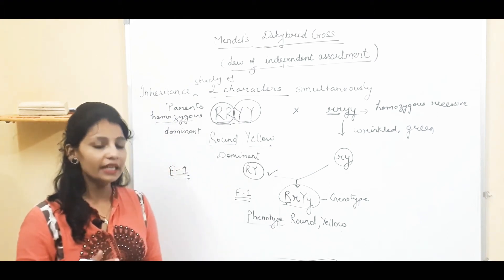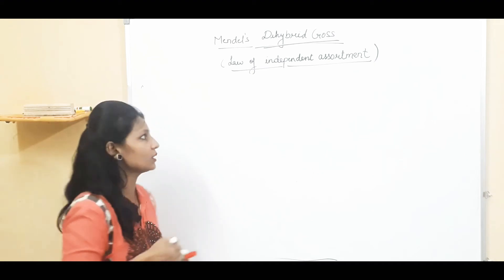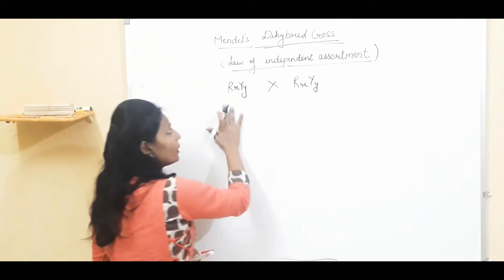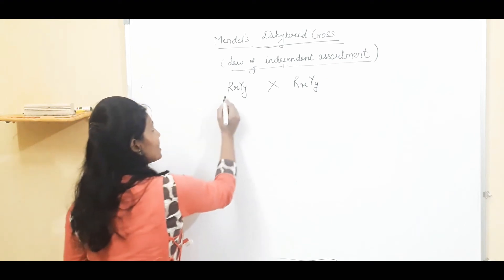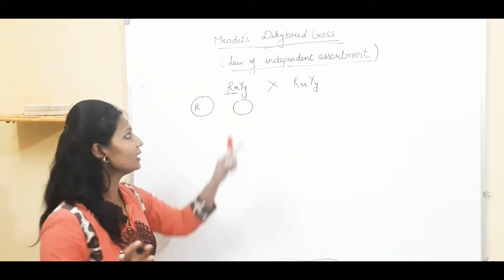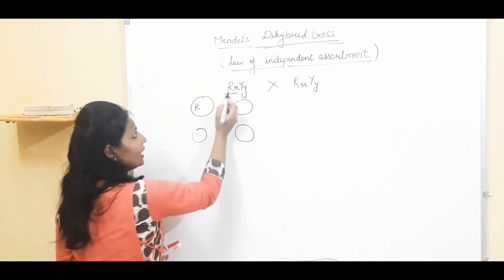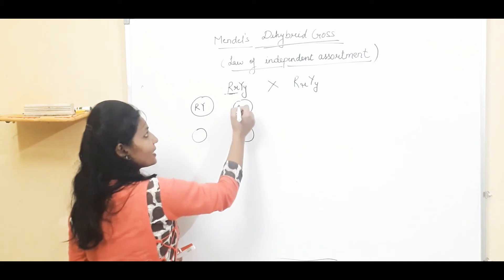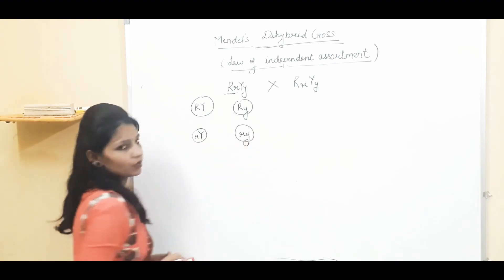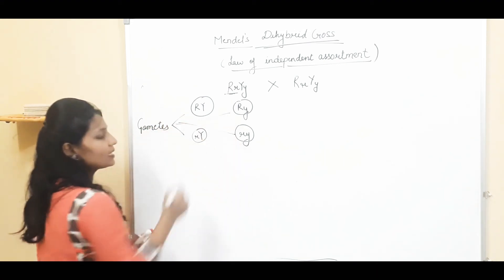Now we study the F2 generation. The F1 generation plants are self-crossed. We make gametes from the F1 plants (RrYy). These four types of gametes are possible: capital RY, capital R small y, small r capital Y, and small r small y.